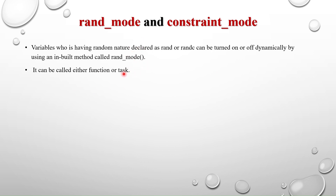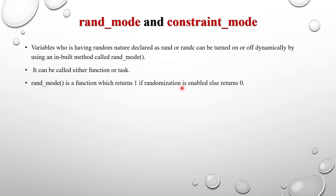Rand_mode can be called either as a function or as a task. To differentiate: if you call rand_mode as a function, you don't pass any arguments inside the parentheses, and it will return 1 if randomization is enabled or 0 if it is disabled. If you call it as a task, you pass the argument 0 to disable or 1 to enable.